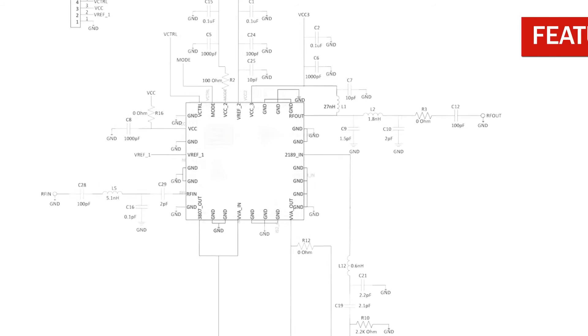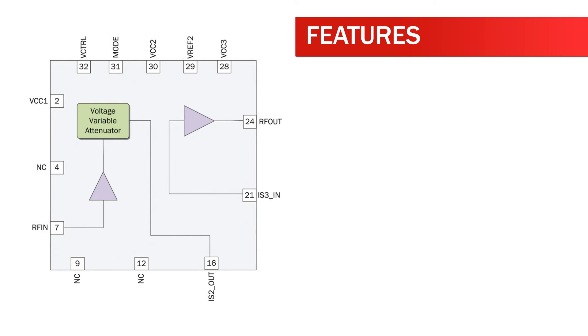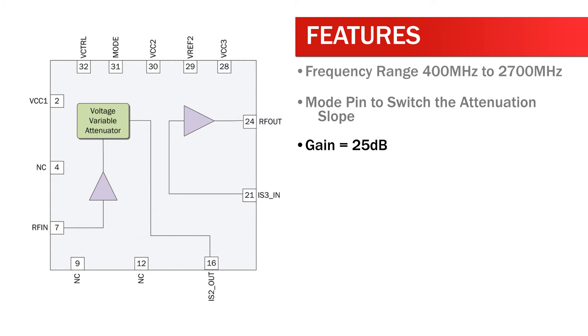Features of the RFVA0016 include frequency range 400 MHz to 2700 MHz, mode pin to switch the attenuation slope, gain 25 dB, and gain control range greater than 30 dB.